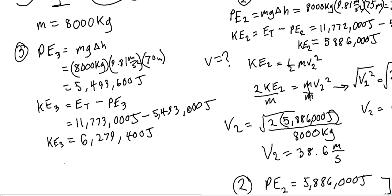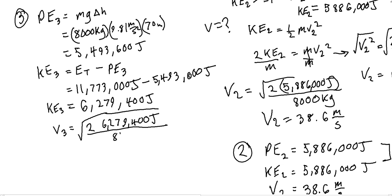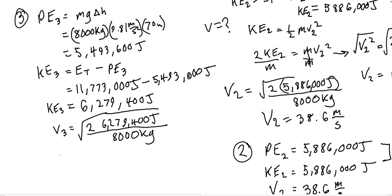Since we already derived the velocity equation, v₃ equals the square root of 2 times kinetic energy divided by mass: the square root of 2 times 6,279,400 joules divided by 8,000 kilograms. Throwing that back in the calculator, we get 39.62 meters per second. So v₃ is equal to 39.62 meters per second.